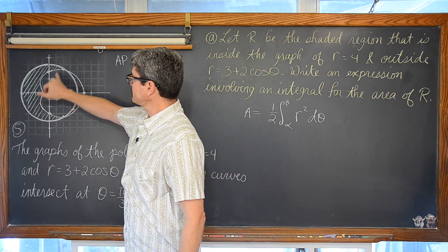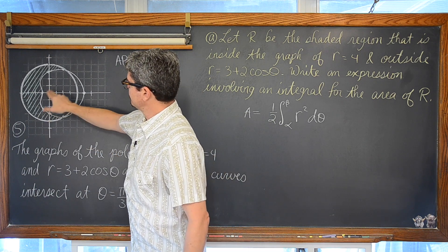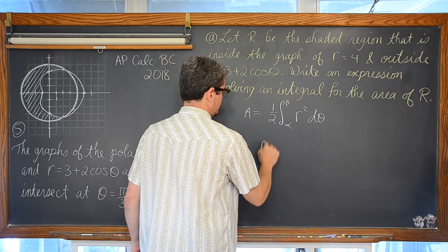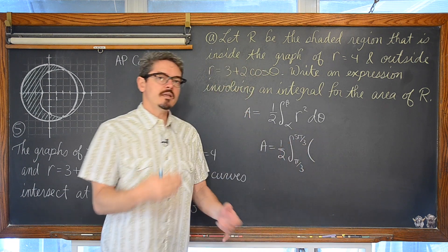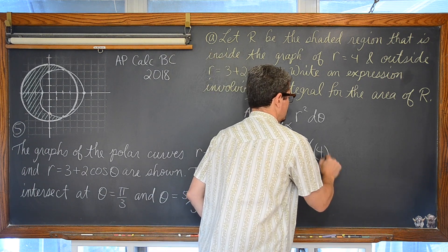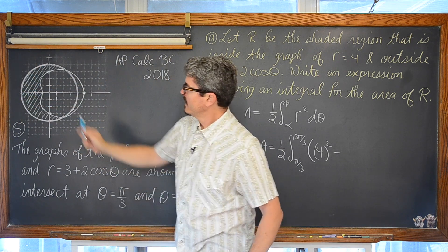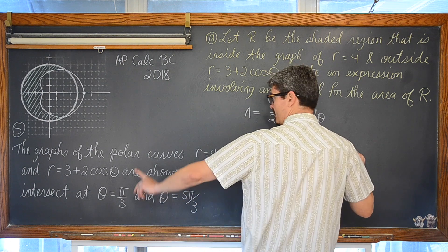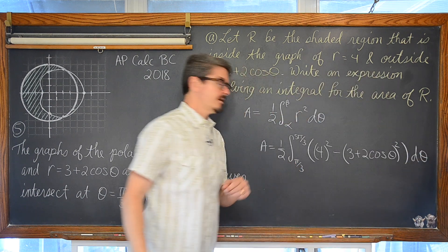We are going to find the area within the circle between pi over 3 and 5 pi over 3 — kind of like you have taken a pizza and cut out a couple of pieces — and then take out the area of the limaçon. So our area is equal to one half the definite integral from pi over 3 to 5 pi over 3 of 4 squared minus the quantity 3 plus 2 cosine of theta squared d theta. And that is it, part A is done.